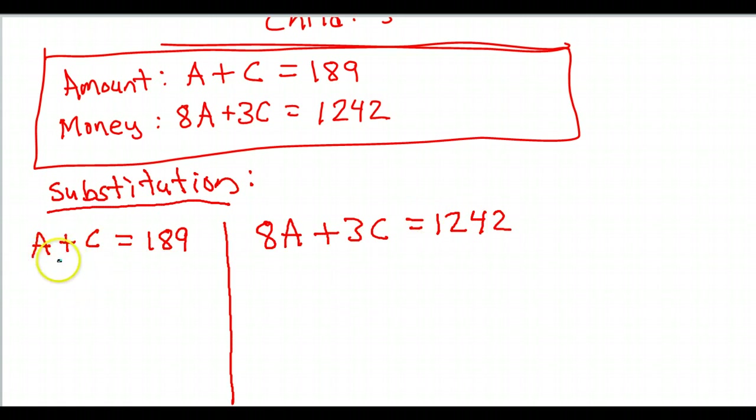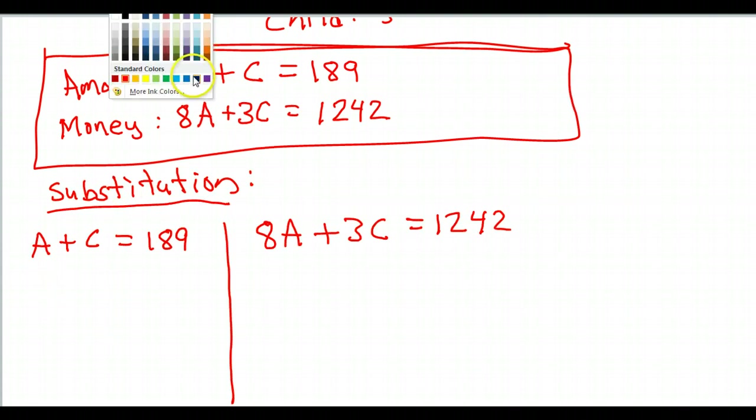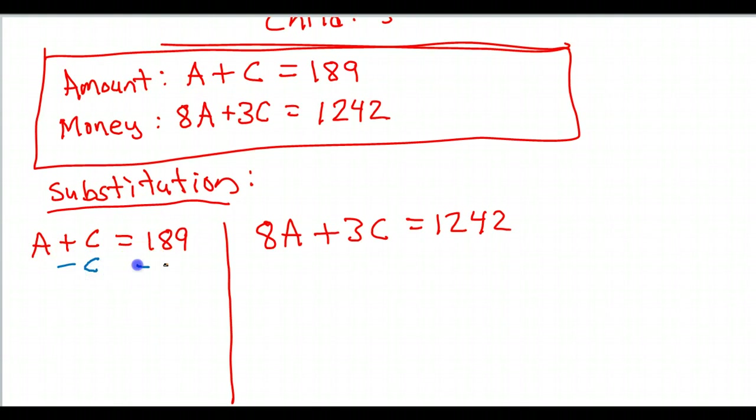Substitution works like this. You get one variable by itself, and then you can substitute into the other equation. So, for example, let's say if we get A by itself. We could get A by itself by subtracting C from both sides. Minus C, minus C. So, that's going to give me A equals 189 minus C.